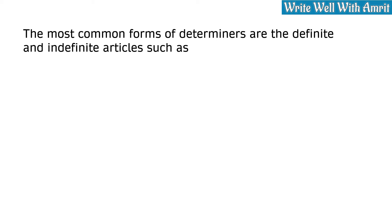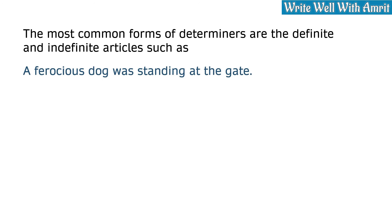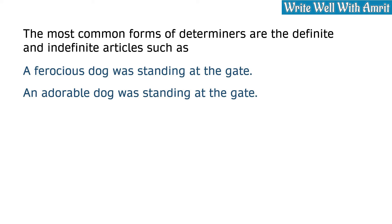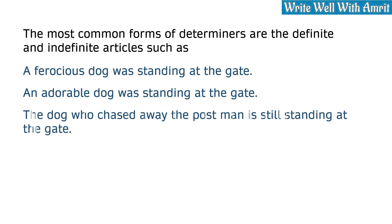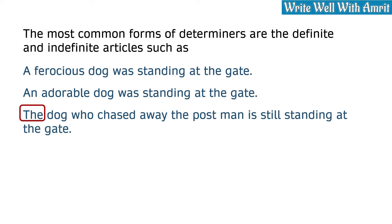The most common forms of determiners are the definite and indefinite articles. For example: 'A ferocious dog was standing at the gate.' 'An adorable dog was standing at the gate.' 'The dog who chased away the postman is still standing at the gate.' In the first sentence, 'a' is an indefinite article. In the second, 'an' is an indefinite article. In the third, 'the' is a definite article.